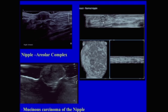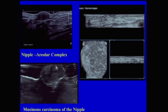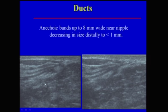The new automated breast ultrasound units are also very helpful in visualizing the nipple-areolar complex and the tissue posterior to it. On the coronal view you can see nicely the skin and the nipple, and on the perpendicular projections the nipple can be well evaluated. In contrast, another patient had a very enlarged nipple — this was Mucinous carcinoma of the nipple, a very rare process. The ducts can be seen by ultrasound as anechoic bands up to 8 millimeters wide near the nipple, decreasing in size distally to about 1 millimeter, and their arborization can be seen on ultrasound images.